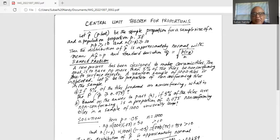Let's work out a sample problem utilizing the Central Limit Theorem for Proportions. A new process has been designed to make ceramic tiles. The goal is to have no more than 5% of the tiles be non-conforming due to surface defects. A random sample of 1000 tiles is inspected. Let p hat be the proportion of non-conforming tiles in the sample. If 5% of the tiles produced are non-conforming, what is the probability of the sample proportion greater or equal to 0.075? Part b: based on the answer to part a, if 5% of the tiles are non-conforming, is a proportion of 0.075 non-conforming tiles in a sample of 1000 unusually large?